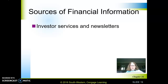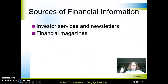The first source you can use to get financial information is investor services and newsletters. These include things like Moody's and Standard & Poor's. All of these sources are either print, online, or advisors — people who can help you. So all financial information is available in writing, online, or through people.